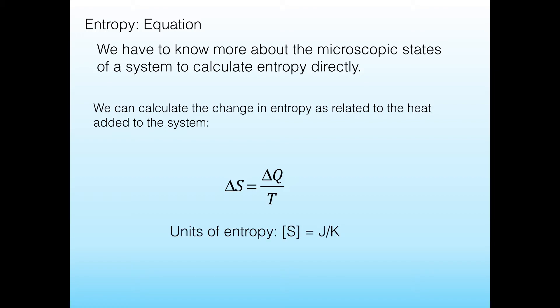And given this definition, that gives us the units of entropy to be joules per kelvin. Because remember that the units for heat transfer are joules, which is energy. And in our current units, the units for temperature are kelvin.